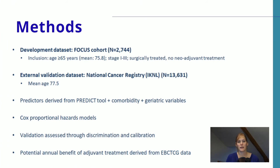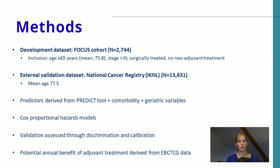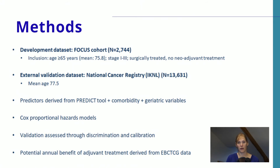The tool was developed in a population-based dataset — the FOCUS cohort with almost 3,000 patients — including patients aged 65 years or older with stage 1 to 3 breast cancer who were surgically treated. It was externally validated in a large cancer registry database of 13,000 patients. The predictors were derived from PREDICT, then supplemented with comorbidity and geriatric variables. We used Cox proportional hazard methods to develop the models, assessed validation using discrimination and calibration, and added treatment benefits based on the EBCTCG overview of randomized clinical trials.